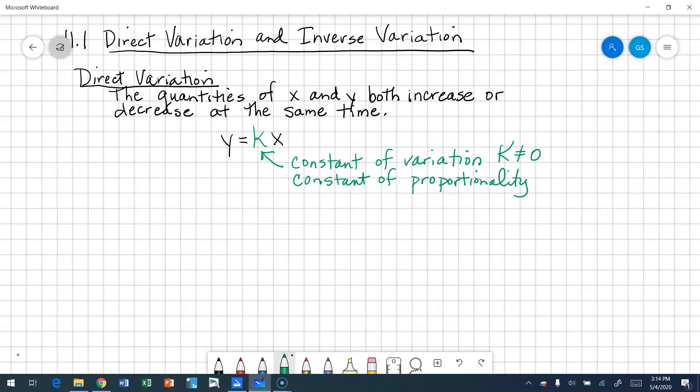Because if I were to divide both sides by x, I would have something that looks like this. Y over x is equal to k. So it's the constant of proportionality. If I have an equivalent ratio, it would also be equal to k, the constant of proportionality.